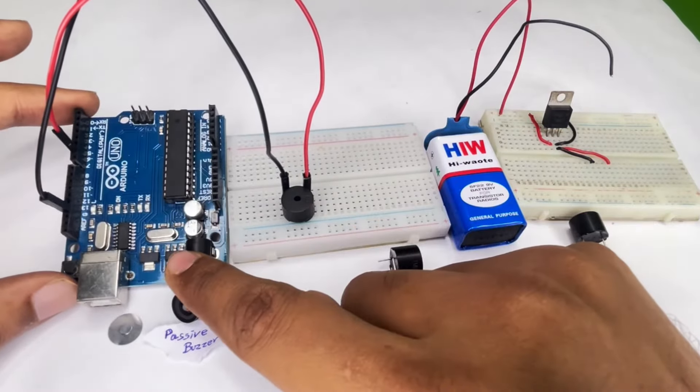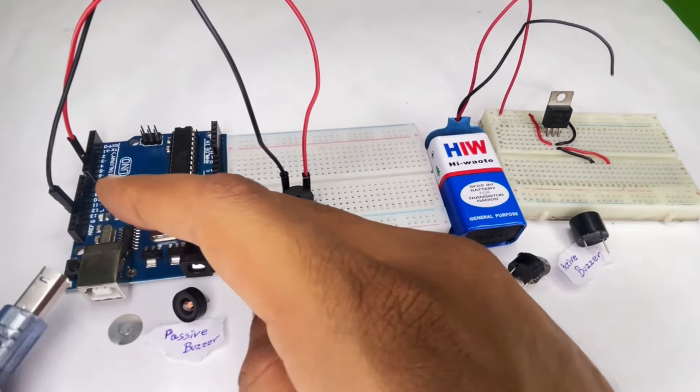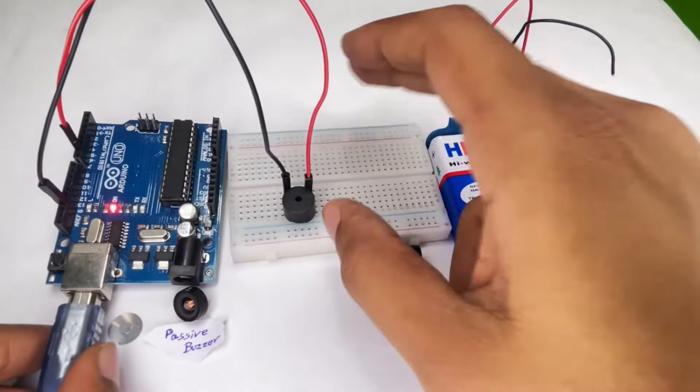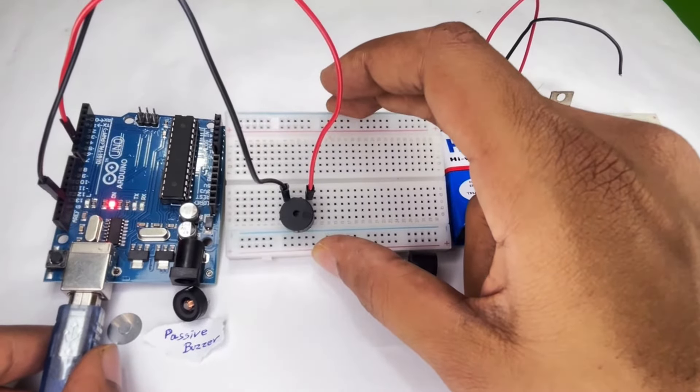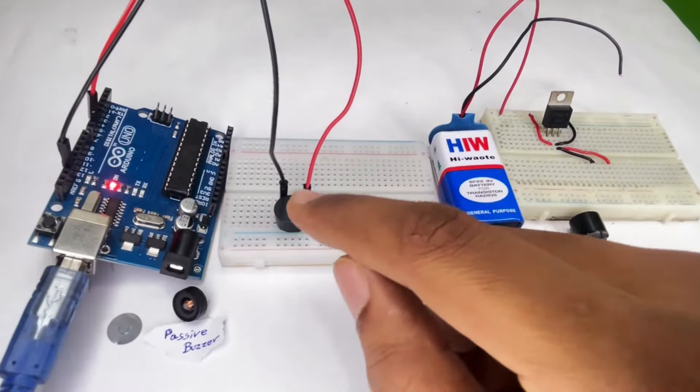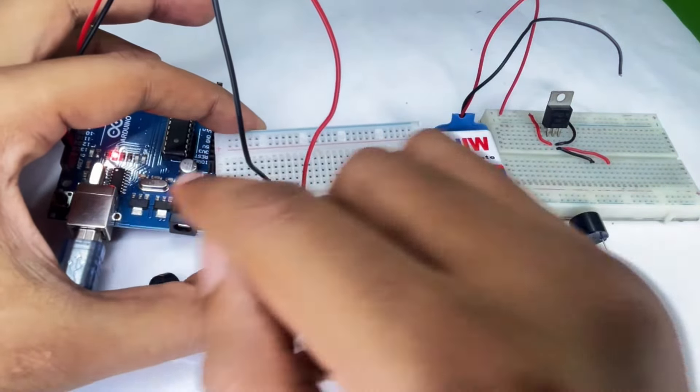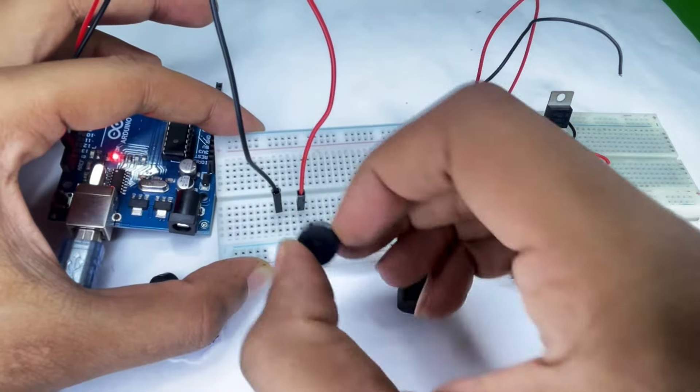So to test a passive buzzer, we have a passive buzzer connected to an Arduino here. Let me quickly power it on. As you can see, as soon as I power it on, the buzzer starts working. This is how a passive buzzer works. It doesn't have a crystal inside, so you have to provide a PWM signal externally.